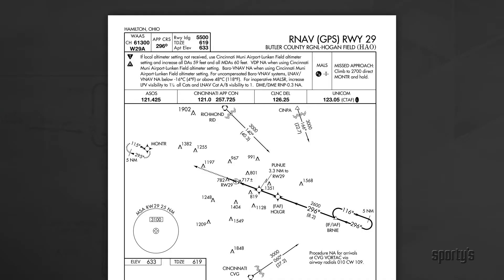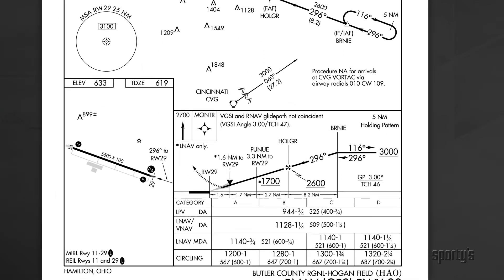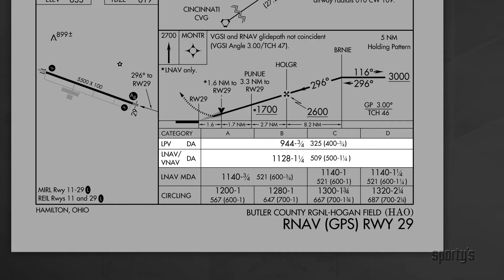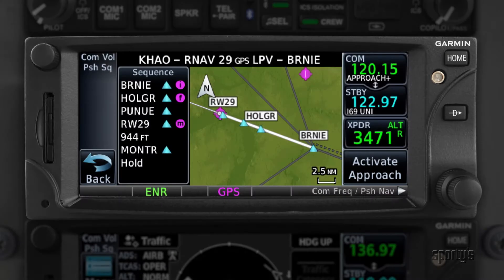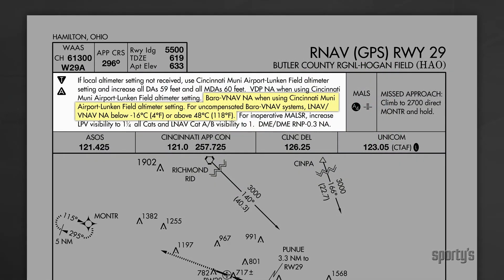Now let's look at the RNAV GPS approach to Runway 29 at the Butler County Airport in Hamilton, Ohio, which includes LPV and LNAV-VNAV options in addition to LNAV. If you were flying with a non-WAAS GPS, you would be limited to using the LNAV or circling minima. Our Garmin GTN 650 is approved for the LPV approach and that is what we will plan to fly. Looking at the notes at the top of the chart, you may notice something called Baro VNAV mentioned, which is a non-WAAS technology that pertains to high-performance airplanes flying the LNAV-VNAV version of the approach.